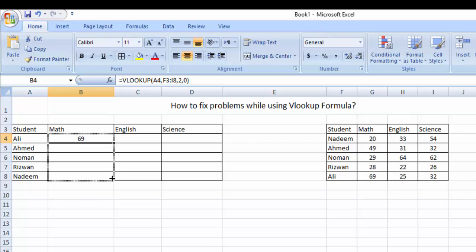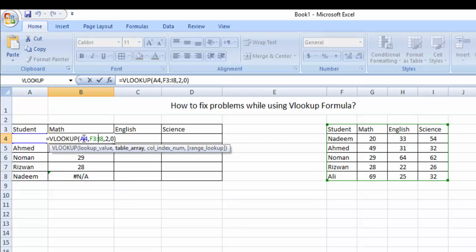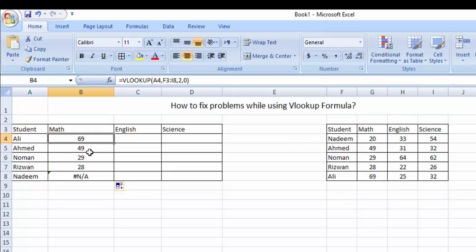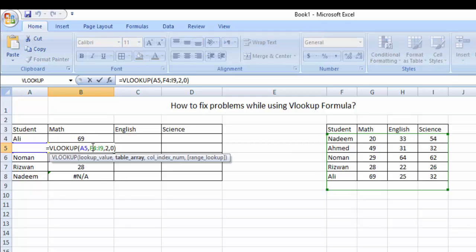But when we apply to whole students and you will get here number sign N/A. This is the problem. So as you can see that if we check this formula, we select the whole table. And when we move down, we will check this.